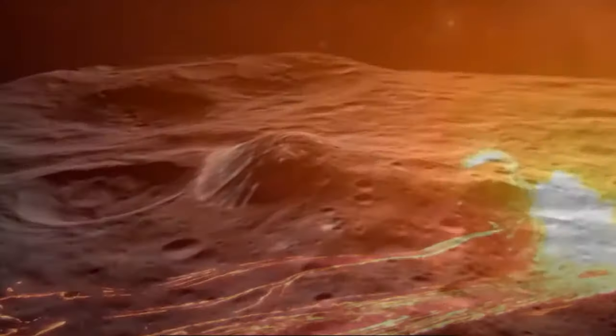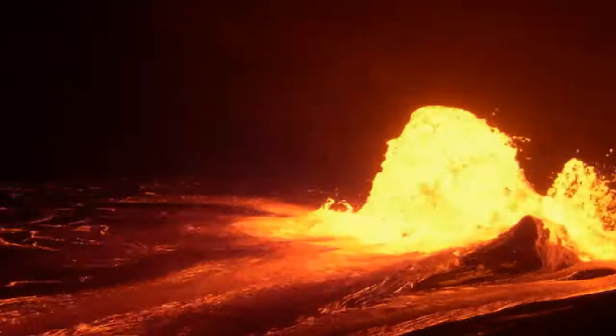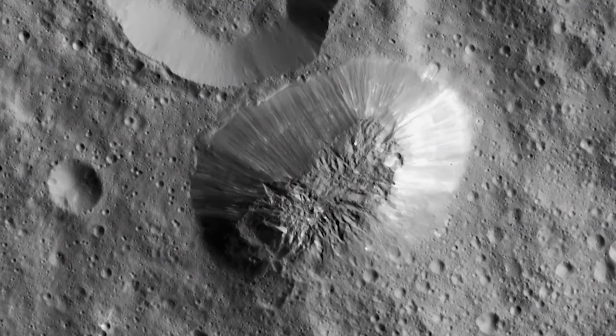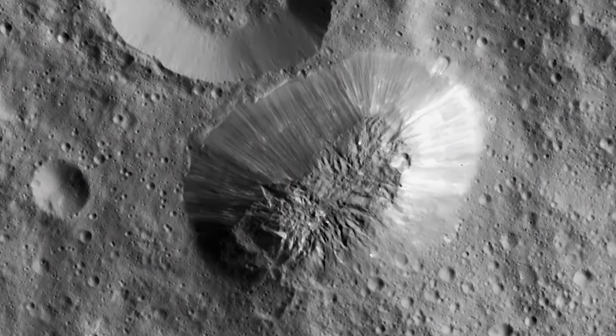This mountain is encircled by a broad circular moat reaching depths of up to 2 kilometers. Some theories posit that Kubrick Mons may be a cryovolcano, in which case the surrounding terrain might have subsided due to the emptying of an underground reservoir.